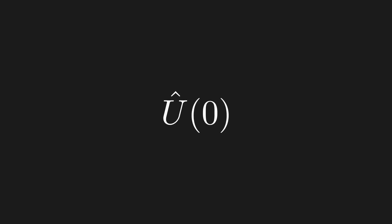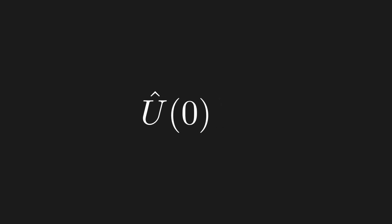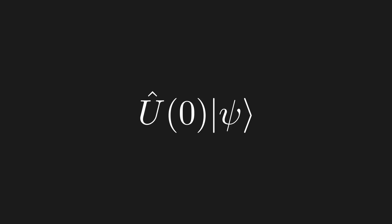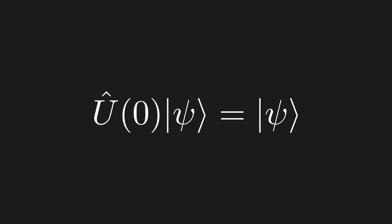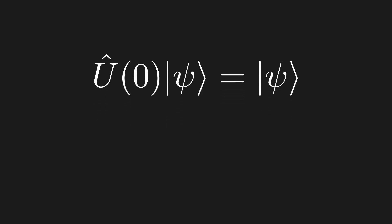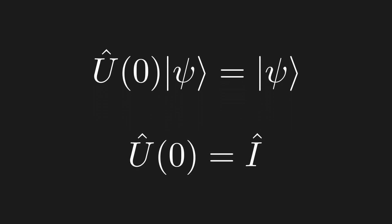First, what should U of zero be? Well, this operator time-evolves our quantum state by zero seconds, which means we do nothing to it — we leave it exactly as it was. Therefore, since U of zero didn't change anything, we expect U of zero to be the identity operator.